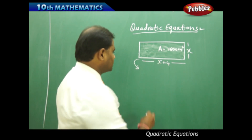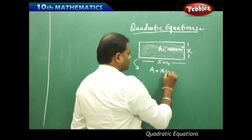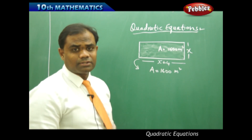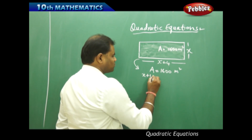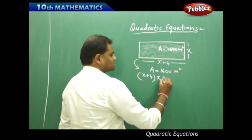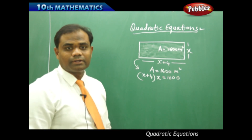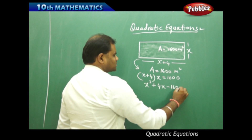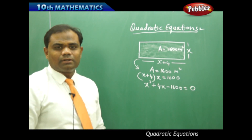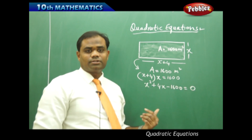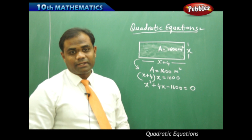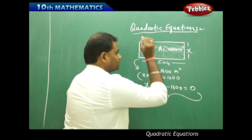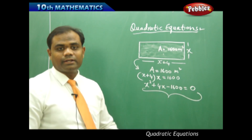Since the area of the rectangle is 1600 square meters, I use the formula: area equals length times width. So, (x + 4) times x equals 1600, which gives me x squared plus 4x minus 1600 equals 0. Taking all variables and constants to the left and keeping 0 on the right-hand side, this equation derived from the rectangular plot problem is called a quadratic equation.